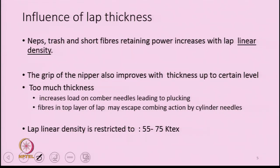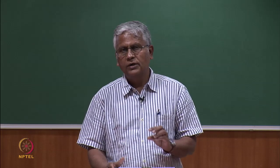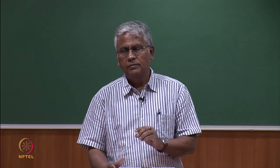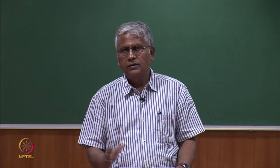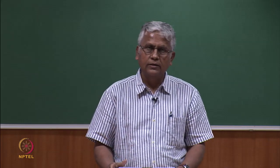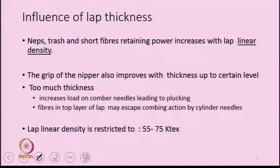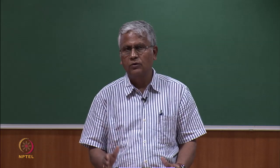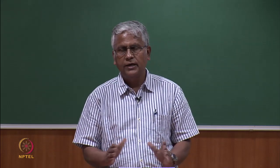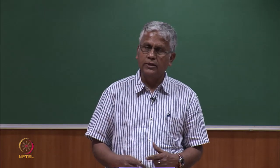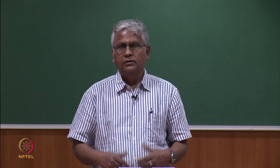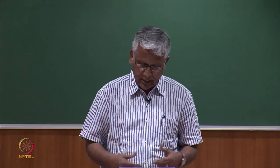Therefore, neither too thin nor too thick a lap is good. Keeping in mind the design aspect of the gripping power of the nippers and the height and inclination angle of the cylinder needles, the lap linear density is restricted to 55 to 75 ktex. This is the range in which comber laps are made. Lap linear density is directly connected to thickness — if linear density increases, thickness increases.